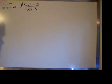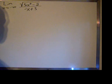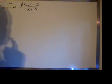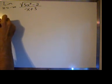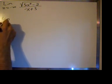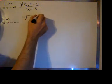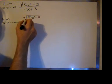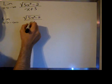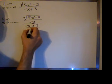The technique in evaluating this limit is we're going to divide the numerator and the denominator by the highest power of x in the denominator, which is x to the first. So I'll do that. We have the limit as x approaches negative infinity of the square root of 5x squared minus 2 divided by x, divided by x plus 3 over x.